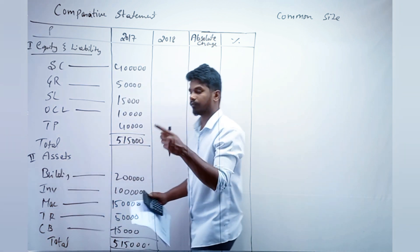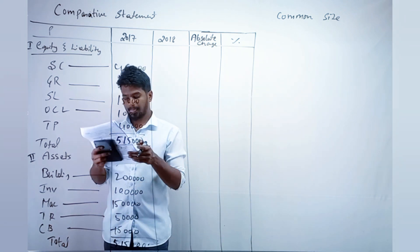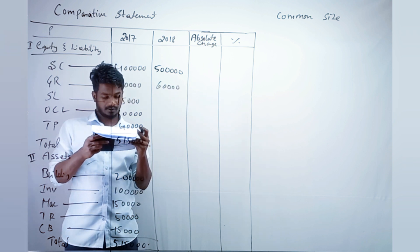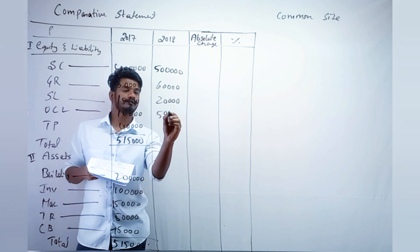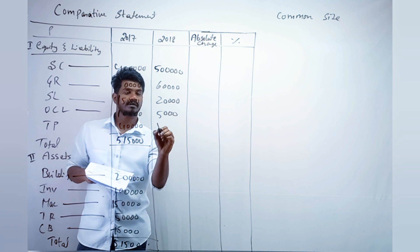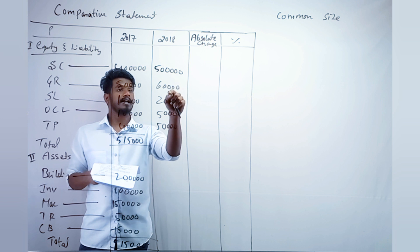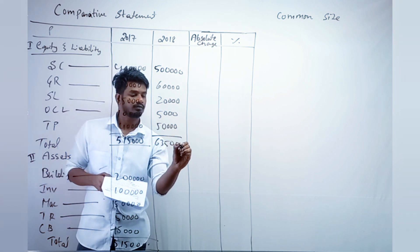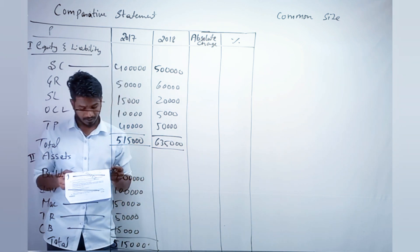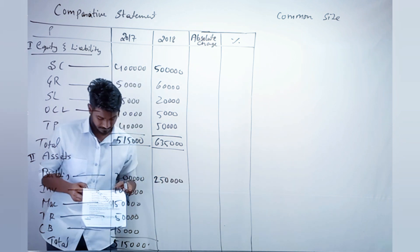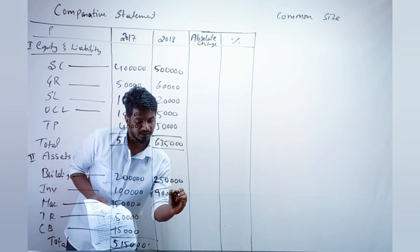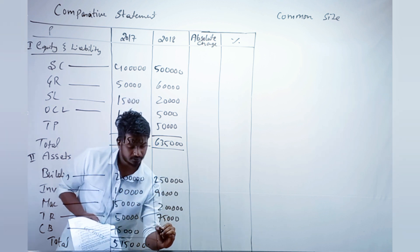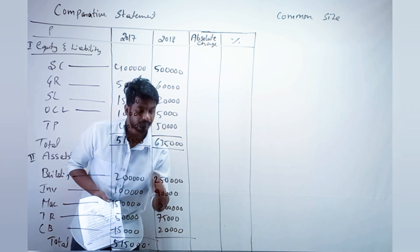Now write the 2018 amounts. Share capital is 5 lakh, general reserve is 60,000, secured loans is 20,000 — wait, let me recount — other current liabilities and trade payable bring the total to around 6 lakh 35,000. For assets: buildings is 2 lakh 50,000, inventory is 90,000, machinery is 2 lakh, trade receivable is 75,000, and cash at bank is 20,000. Total is 6 lakh 35,000.